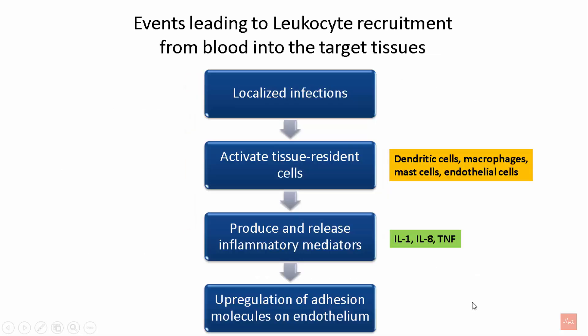There are certain events leading to leukocyte recruitment from blood into the target tissues. Whenever there is any localized infection, resident cells like dendritic cells, macrophages, mast cells, and endothelial cells are activated and they produce and release certain mediators like interleukin-1, interleukin-8, and tumor necrosis factor alpha, which causes upregulation of certain adhesion molecules onto the endothelium.